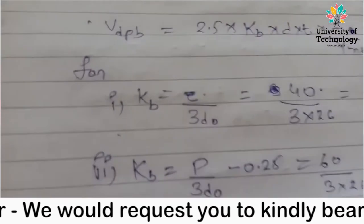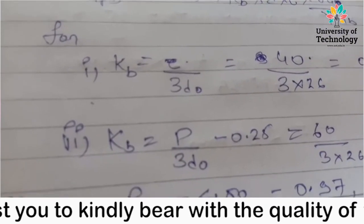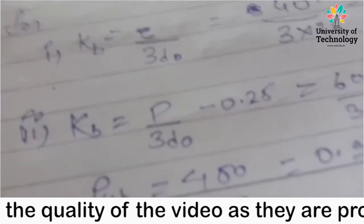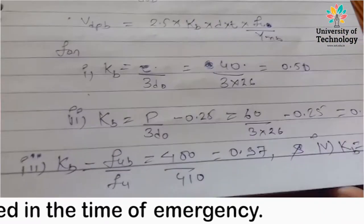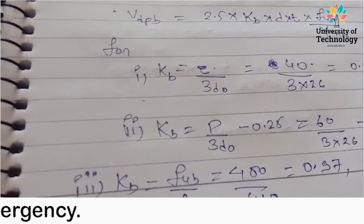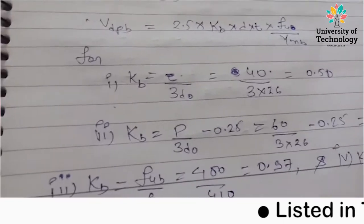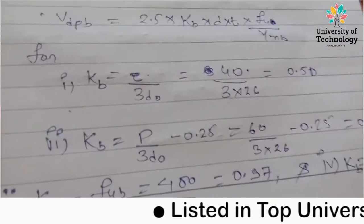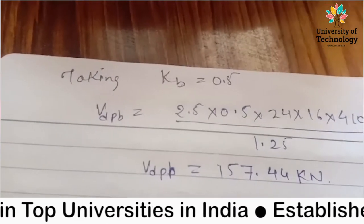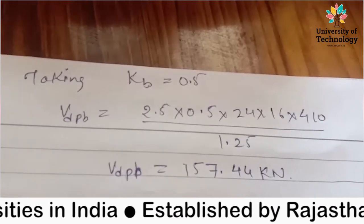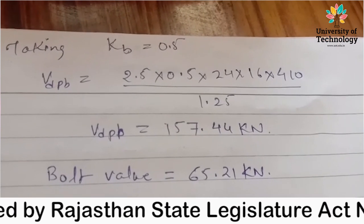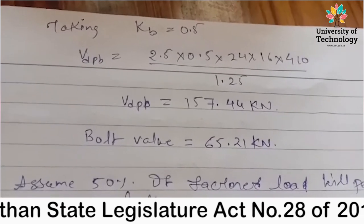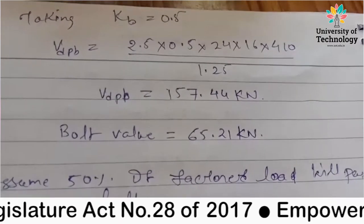VDsb bearing value is 2.5 into kb into d into t into fy fu upon gamma mb. This value, first kb value find 4 conditions. First condition kb equals to e upon 3 d naught, this value is 40 upon 3 into 26, 0.50. Next kb equals to p upon 3 d naught minus 0.25. This value is also 0.25. kb equals to fub upon fu, this value is 0.97. And last kb equals to 1. So minimum is 0.50.